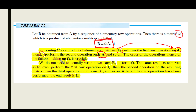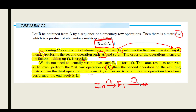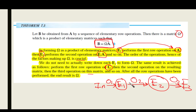We do not need to write down each Eⱼ separately to form Ω. The same result is achieved by starting with the identity matrix Iₙ, performing the first row operation to get E₁, then the second operation on E₁ to get E₂, then the third to get E₃, and so on. After all row operations have been performed, the end result is Ω.